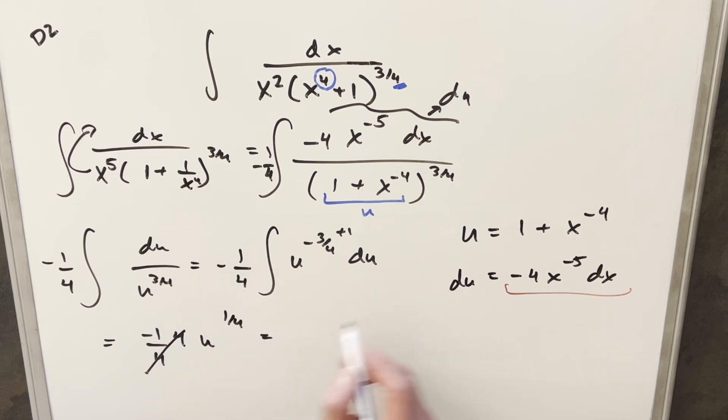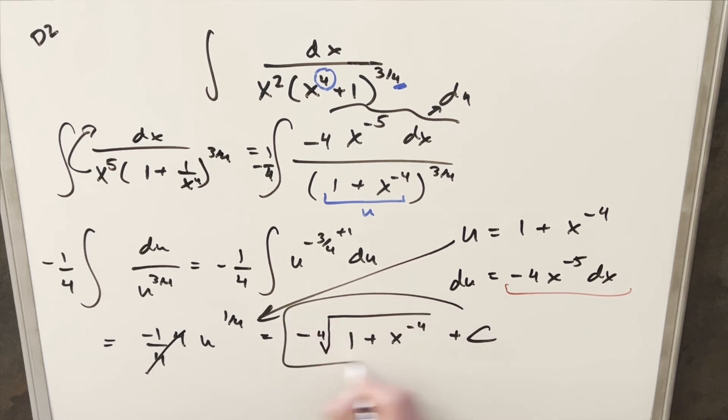And so what I can do in one step, I'll write this as minus 1 4th, I'll write this as a 4th root. And then let's just back substitute. We have our u value right here. So we'll back substitute right in here. And so for the final solution, we'll have minus the 4th root of 1 plus x to the minus 4 plus c. And that's it.